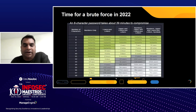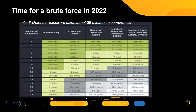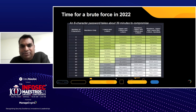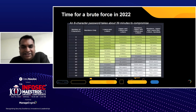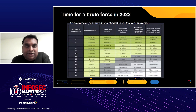Coming to top attacks — everything starts from compromising the password. Even Gartner emphasizes using a very strong password. Based on research done in Manage Engine's test labs, an eight-character password — even with uppercase, lowercase, and symbols — takes just about 39 minutes to compromise using a brute force attack. That's a very critical and alarming fact that people need to be aware of.